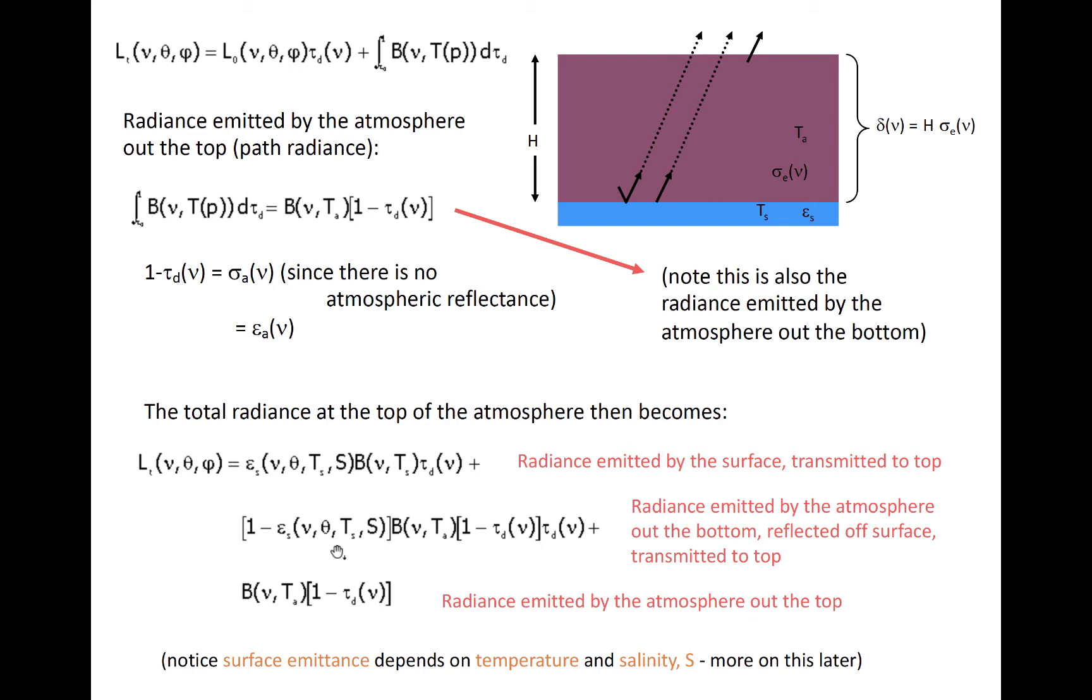The first term represents radiation emitted by the surface that is transmitted all the way to the top of the atmosphere. Note the presence of the emissivity term at the beginning, which is shown as a function of temperature and salinity. The second term, in the middle here, captures the radiance emitted by the atmosphere, the b times 1 minus tau, that is reflected off the surface, where the reflection is represented by 1 minus epsilon, that is transmitted all the way through the atmosphere, which is described by this last tau term. The reflectance is 1 minus emissivity because the emissivity equals the absorptivity, and all radiation not absorbed is scattered off the surface.